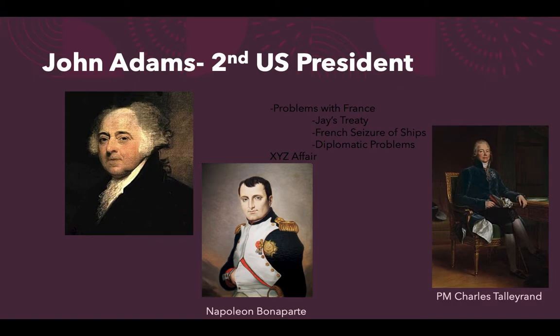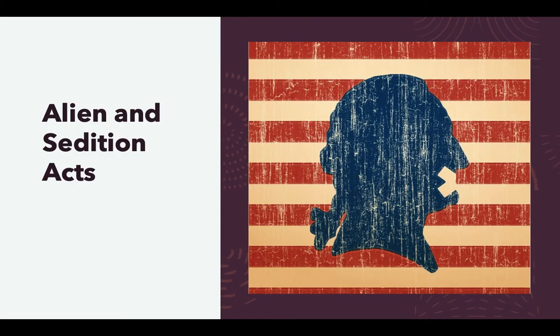A war cry swept through the United States: 'Millions for defense, but not one cent for tribute' — referring to the payment demanded to see Talleyrand. The mood among U.S. citizens became very anti-French, so much so that people stopped listening to French music and stopped importing French goods like wine. This anti-French feeling continued to flourish, and many Federalists believed that French agents and spies were everywhere, secretly plotting to overthrow the government.